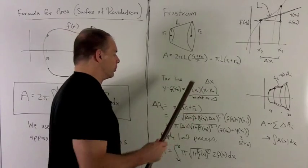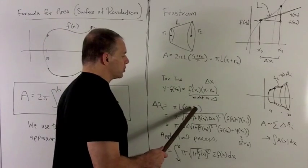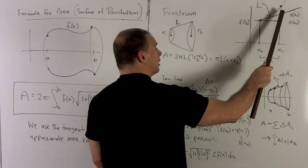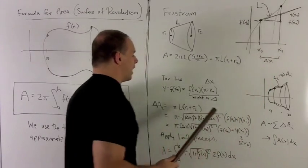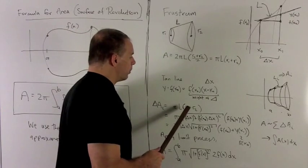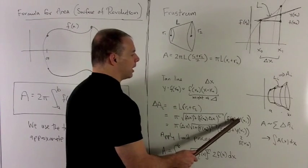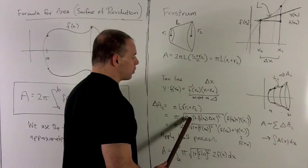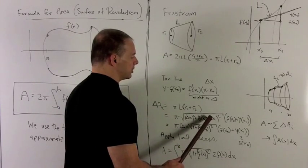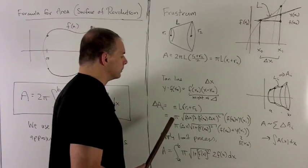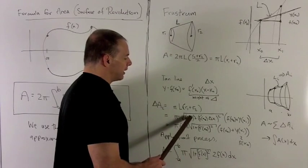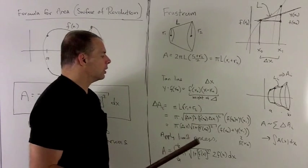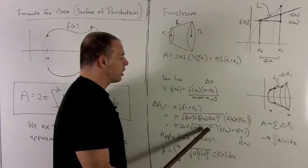Substituting into π·L·(R1 + R2): R1 plus R2 is f(x₀) plus y(x₁), and L comes from the Pythagorean theorem — base Δx squared plus height f′(x₀)·Δx squared. Inside the radical I can factor out Δx squared; bringing it out of the radical just gives Δx, leaving the radical of 1 plus f′(x₀) squared.